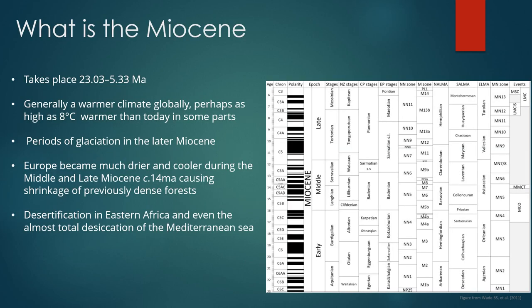Let's start with what the Miocene actually is. This is an expanse of time which takes place between 23.03 to 5.33 million years ago. The Miocene is generally a warmer climate globally, and in some areas it can be as eight degrees warmer than it is today. There are however periods of glaciation in the later Miocene.